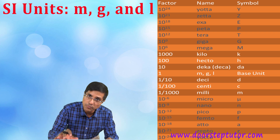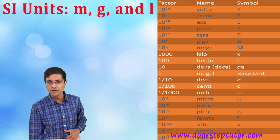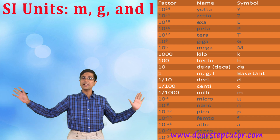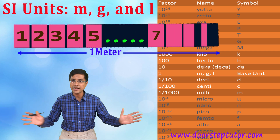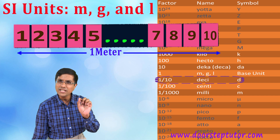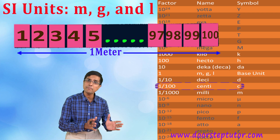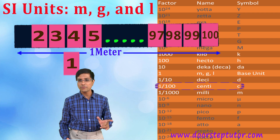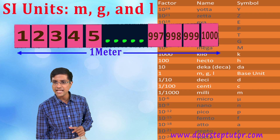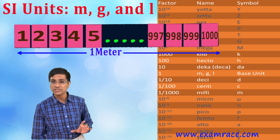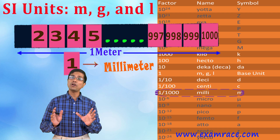Similarly, to measure very tiny distances, scientists took the base unit meter and cut it into parts. They cut it into 10 parts and call one such part a decimeter. They cut it into 100 parts and one such part is called a centimeter. When cut into 1000 pieces, one such small part is called a millimeter.